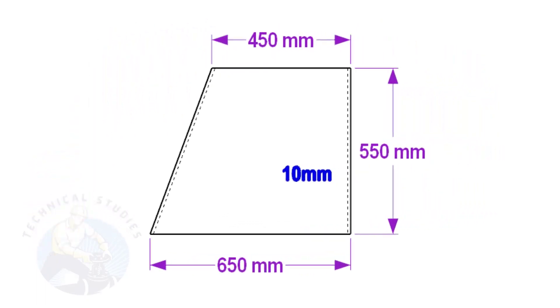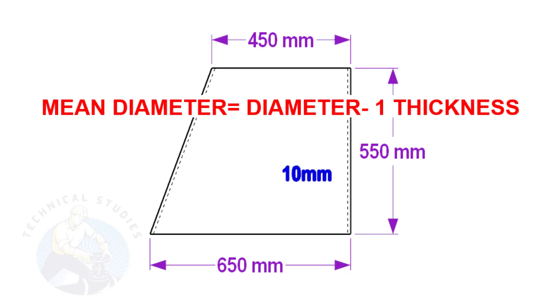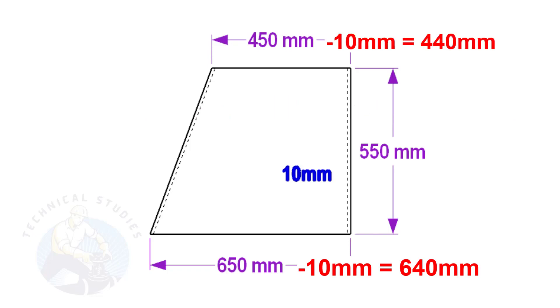To make a layout, we need to calculate the circumference of the top and bottom sides of the cone. To calculate the circumference, we need to know the mean diameter of the cone's bottom and top. Deduct one thickness from the diameter to get the mean diameter. Assume the base diameter of the cone is 650 mm and the thickness is 10 mm, the mean diameter is 650 minus 10 equals 640 mm.